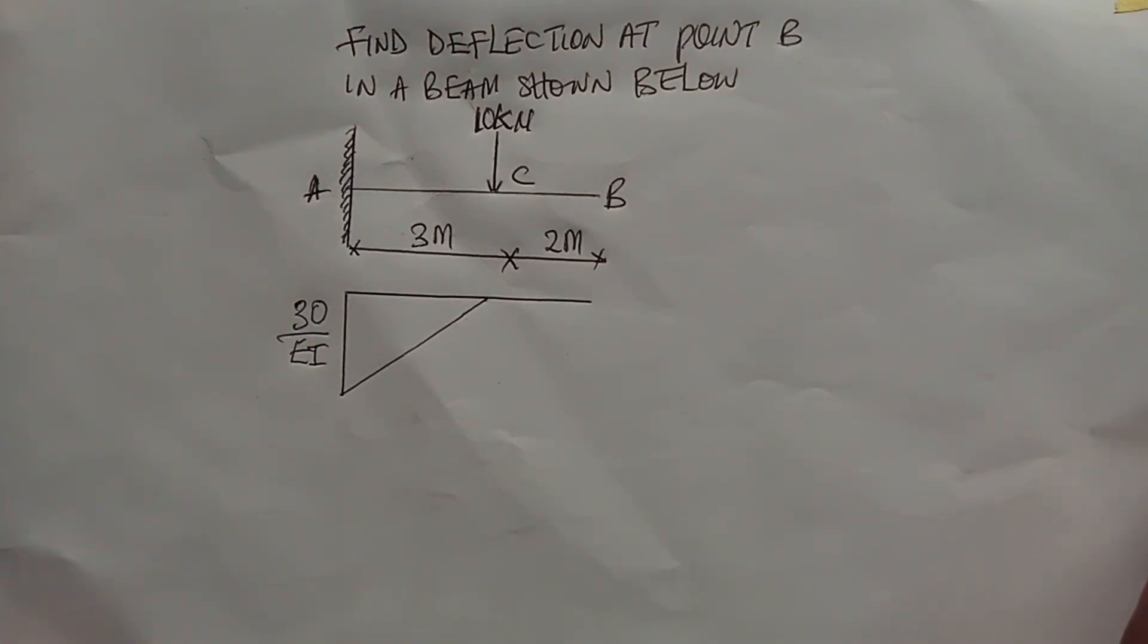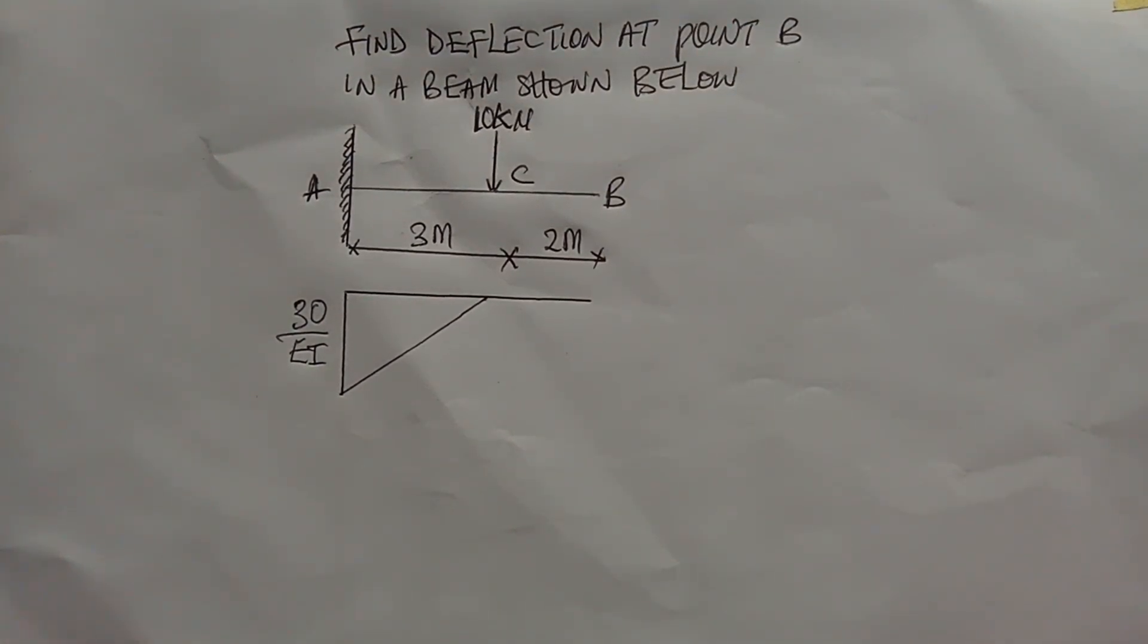Now, what you have to do is to use this shape of the bending moment diagram to determine the deflection at point B. How do you do that?